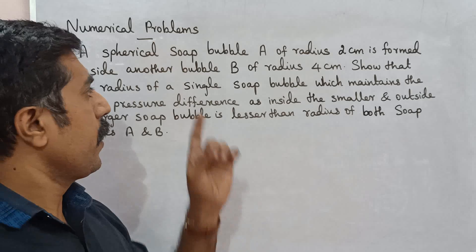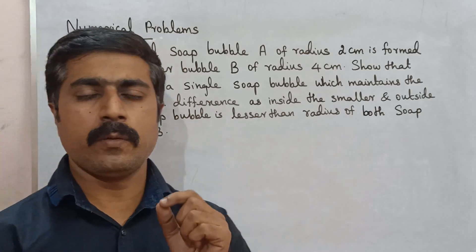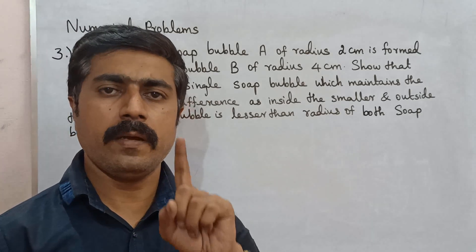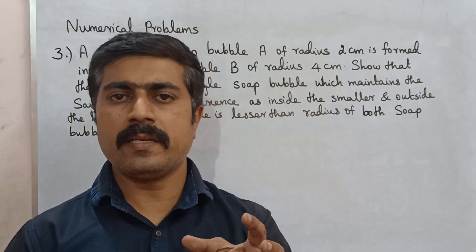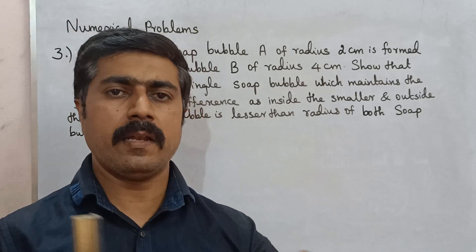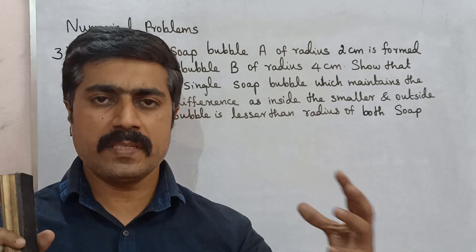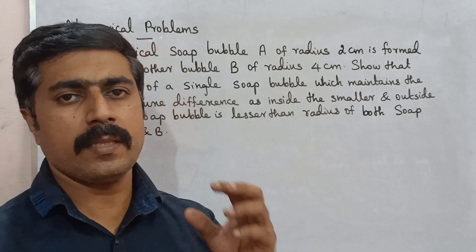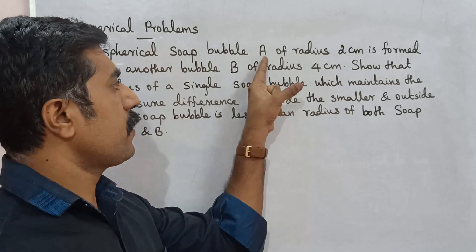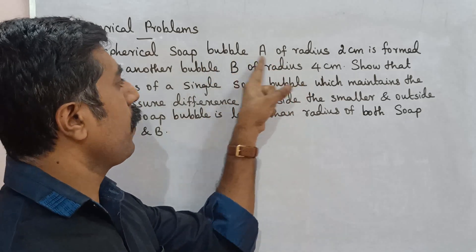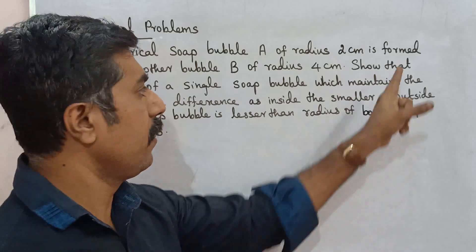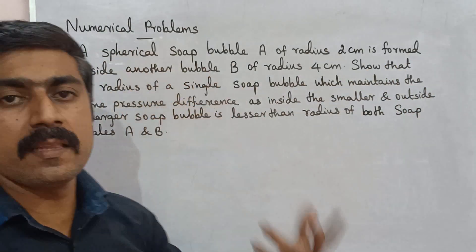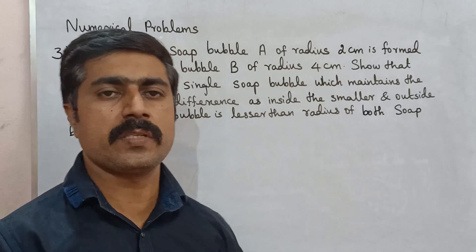It's very simple. So what I am saying, first one is a spherical soap bubble A. Surface tension, I mean the force acting, makes the bubble a spherical shape. In this spherical shape, the bubble has a radius of 2 cm. This is formed inside another bubble B of radius 4 cm.